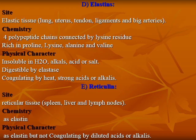Elastin is coagulated by heat, strong acid, or alkaline. The last type of scleroprotein is reticulin. Reticulin is present in reticular tissue such as the spleen, liver, and lymph nodes. Chemically it is similar to elastin, but differs in that it is not coagulated by diluted acid or alkaline.